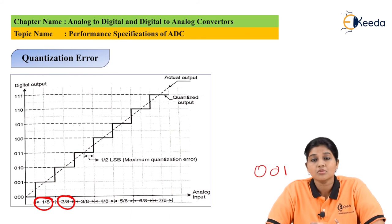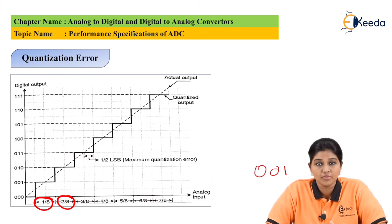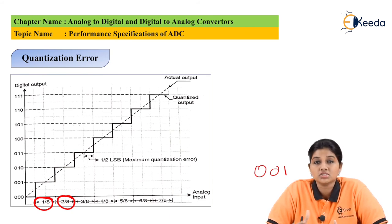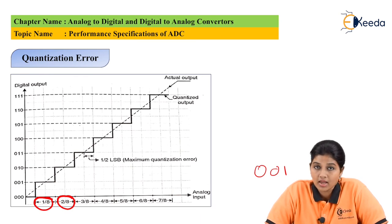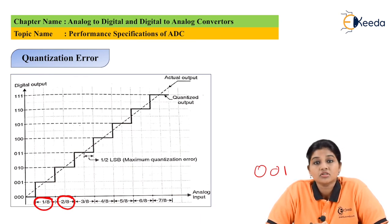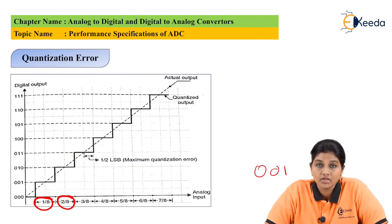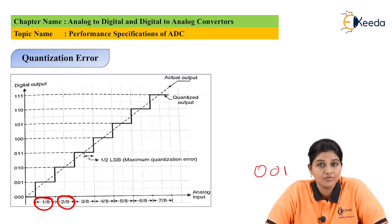So these are the performance parameters, selection parameters, or characteristics of ADC that we need to consider while selecting an ADC for a particular application. Now let's see what are the different types of ADC available in the market which can be used for various applications.